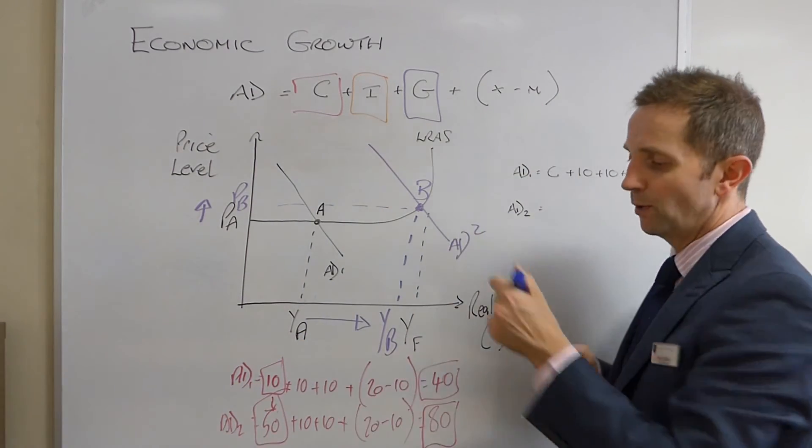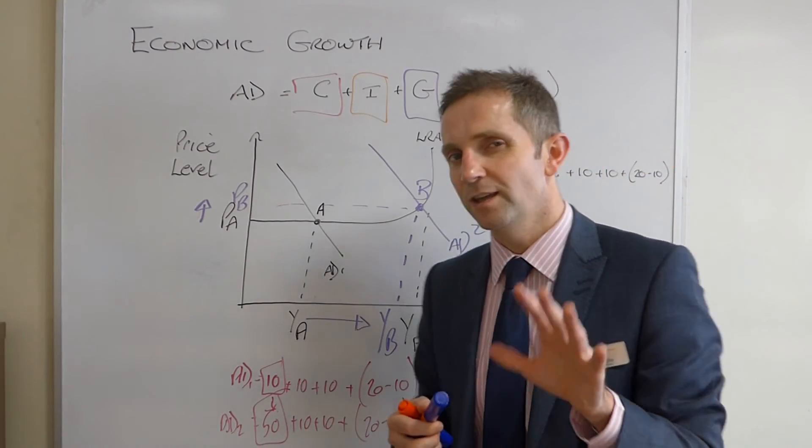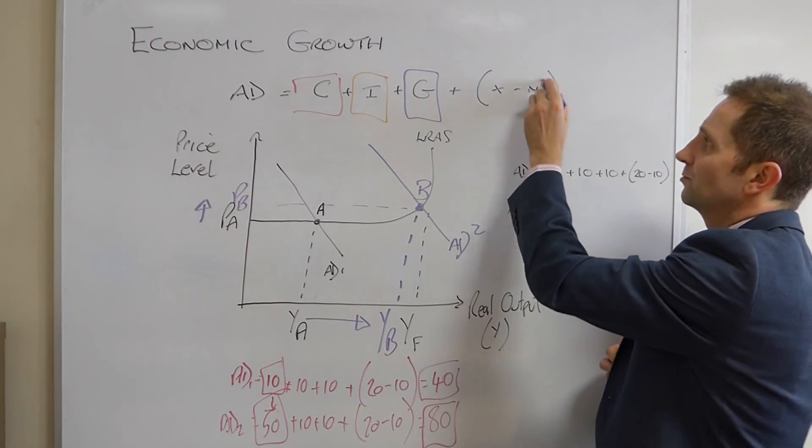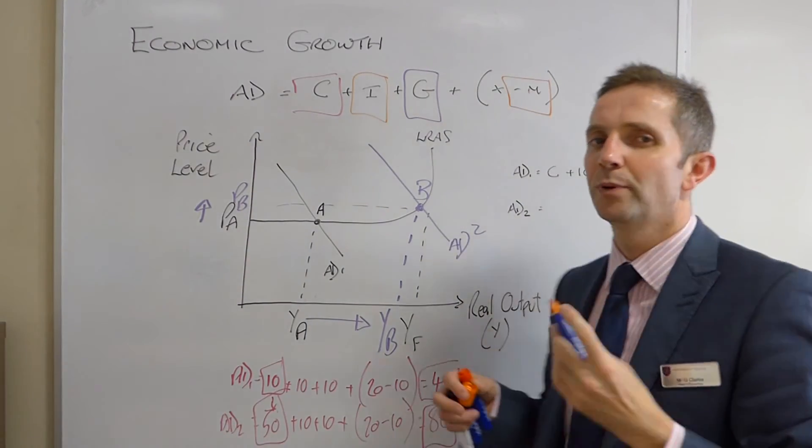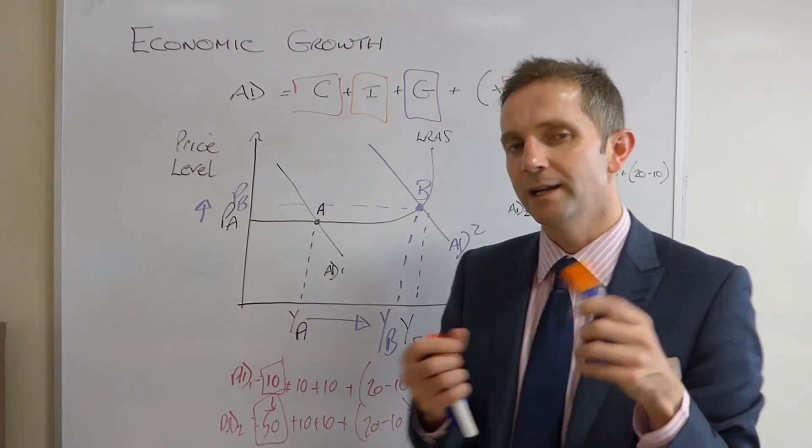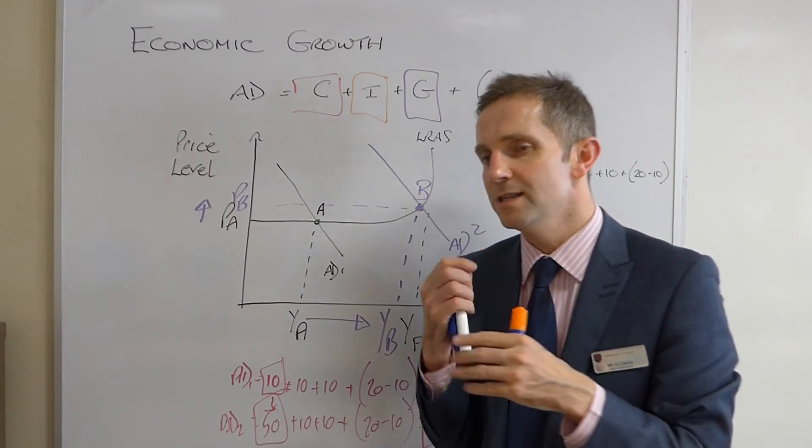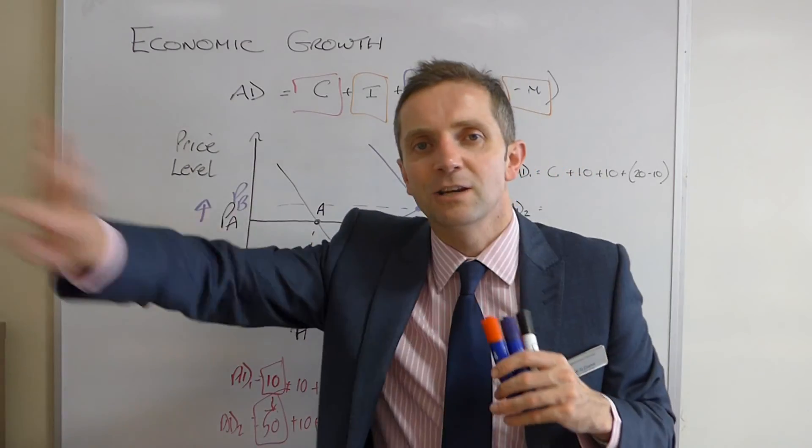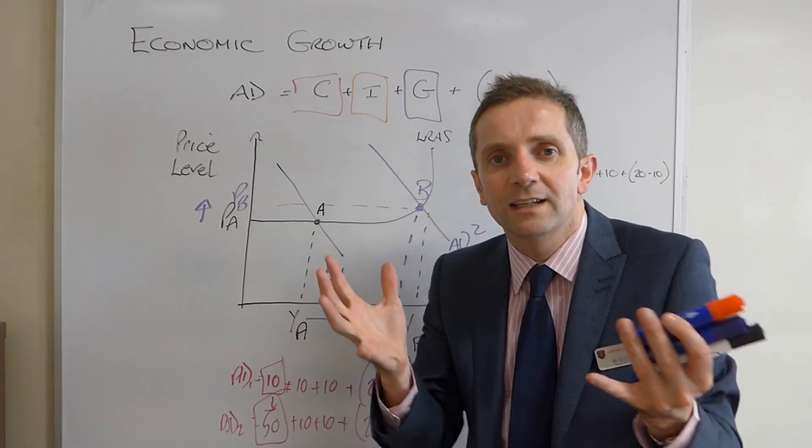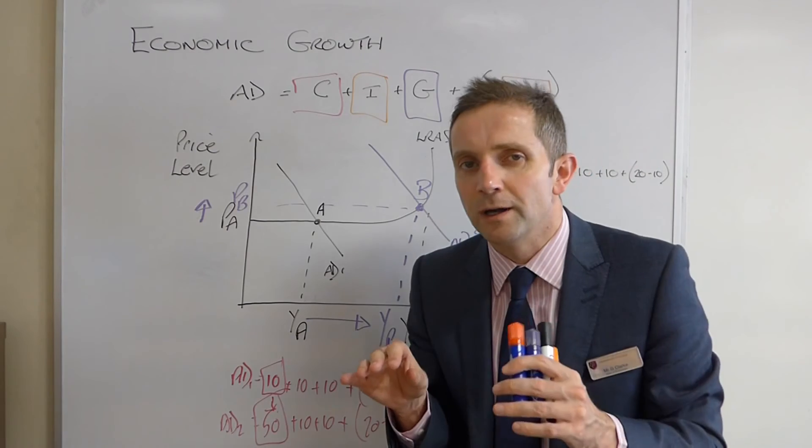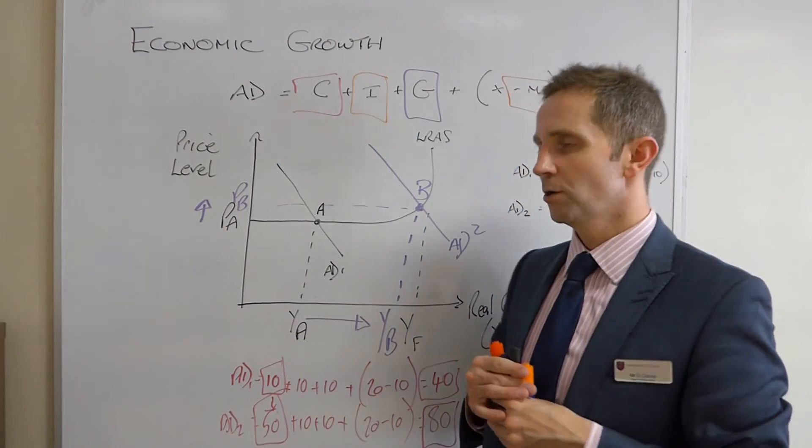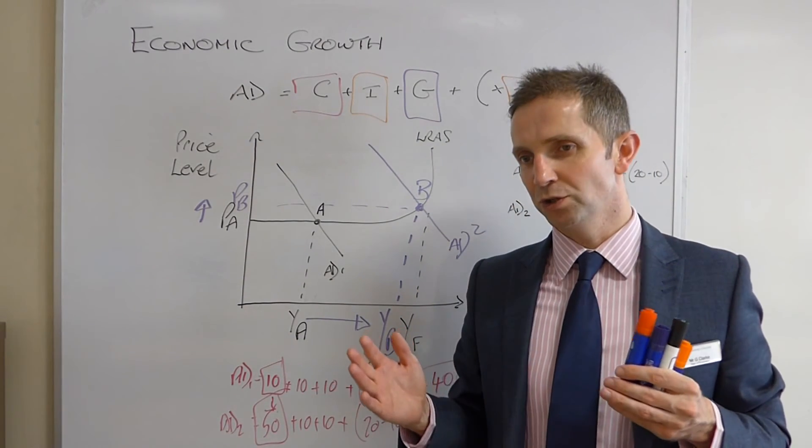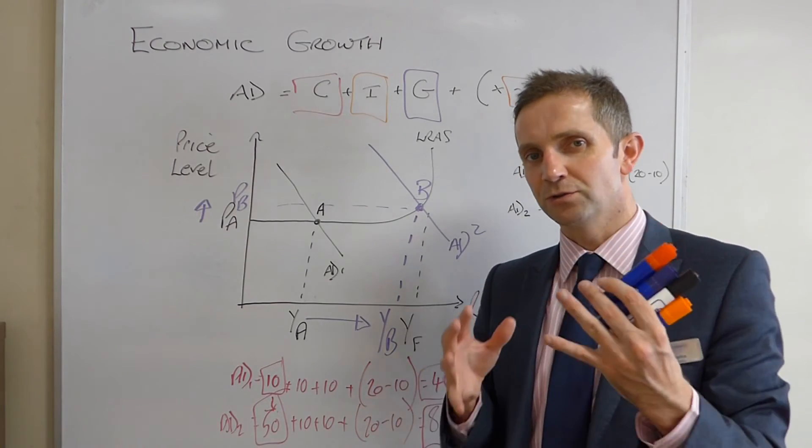And then, what about imports? Well, imports, ladies and gentlemen, think about this. Imports, we've got minus M. And the problem with imports is that when you buy an import, although the good is coming in, the money is actually leaking out of the economy. So, therefore, if you want to boost AD, you would want to have fewer imports, not more. So, think about ways in which you could have fewer imports. And, of course, Donald Trump, President Trump, is all about this at the moment, reducing the number of goods coming in from abroad, being much more nationalistic in that respect.